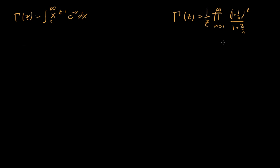Last time we derived this, but what we didn't see was that these two expressions are actually equal. Just looking at them, it's not obvious that for every value of z these two are going to be the same. So that's what I want to do in this video — create an argument to convince you that these two are actually the same — and I'm going to do that in two parts.